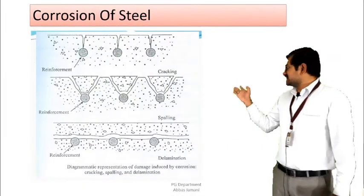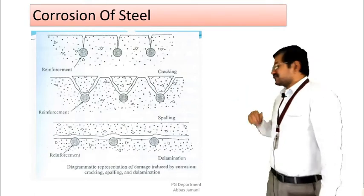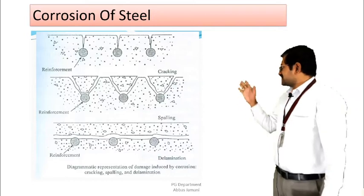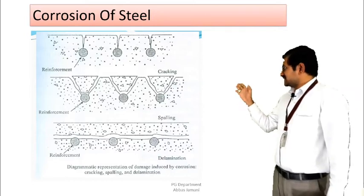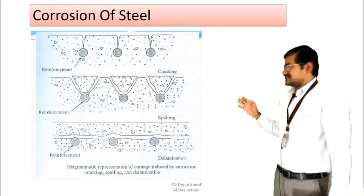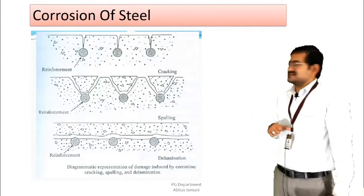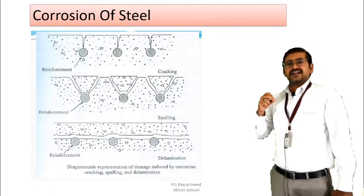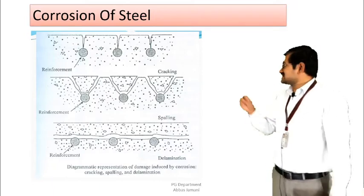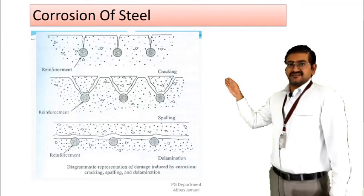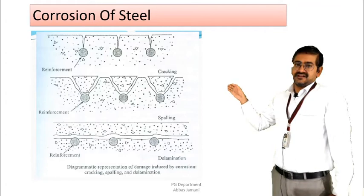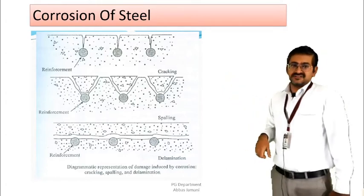Looking at the figure showing the entire effect of corrosion on the surrounding concrete structure: in the first stage the cracking phenomenon is there, in the second stage the falling of the surface takes place, and in the third stage the delamination of the surface. If the concrete is not dense enough or is porous in nature, then from the surface it will try to reach the inner reinforcement surface through the cracks developed.